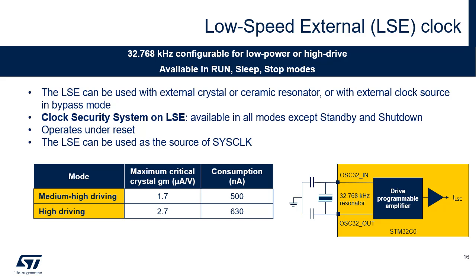The 32.768 kHz low-speed external oscillator can be used with an external crystal or resonator or with an external clock source in bypass mode. In bypass mode, an external clock source must be provided; it can have a frequency of up to 1 MHz. The oscillator driving strength is programmable. It can be changed at runtime using the LSE DRV bit in the RCC Control and Status Register 1 (RCCCSR1) to obtain the best compromise between robustness, short startup time, and low power consumption. A clock security system monitors for failure of the LSE oscillator. In case of failure, the application can switch the RTC clock to the LSI and an NMI is automatically generated. The CSS is functional in all modes except shutdown, and also functional under reset. The LSE can be used as the source clock of SysCLK.